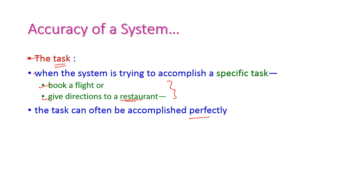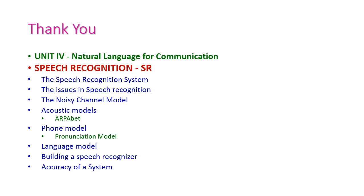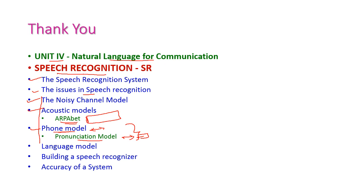So far we have seen the speech recognition system from the fourth unit: natural language for communication. We covered what speech recognition means, issues in speech recognition, different models including the noisy channel model and acoustic model — which includes the ARPABET phonetics table, phone model, and pronunciation model — as well as the language model, building a speech recognition system, and accuracy of the system. For more information please go through your textbook. In the next class we will see another important topic from the fourth unit. Thank you.